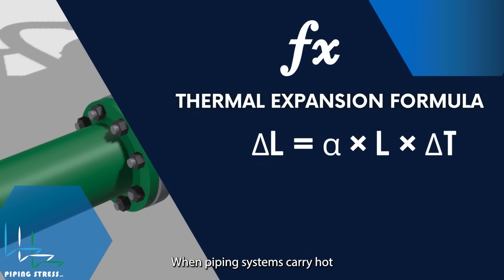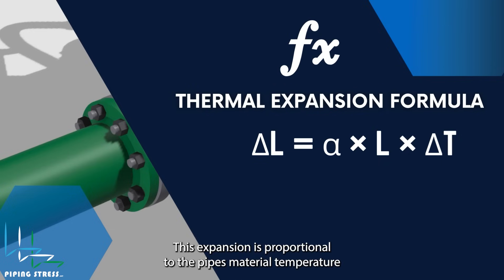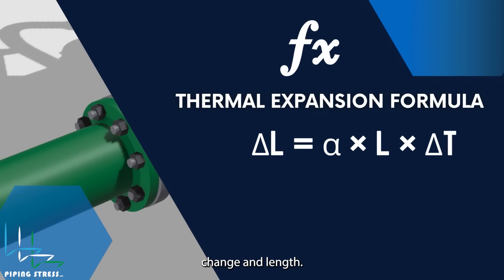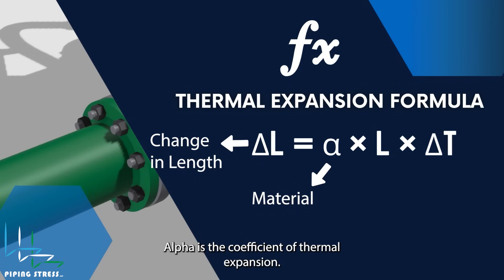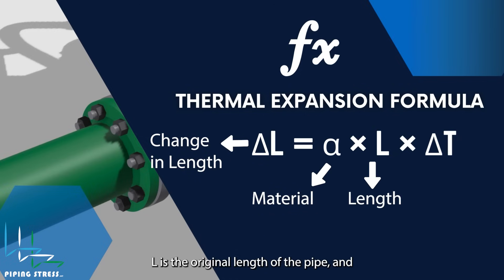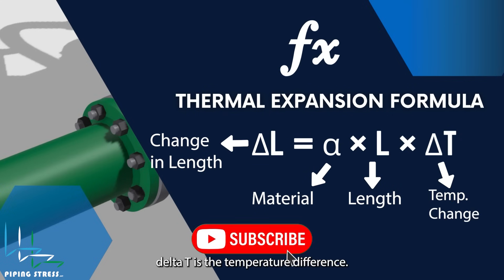When piping systems carry hot fluids, the pipes absorb heat and expand. This expansion is proportional to the pipe's material, temperature change, and length. The formula for thermal expansion is simple: Delta L is the change in length, alpha is the coefficient of thermal expansion, L is the original length of the pipe, and delta T is the temperature difference.